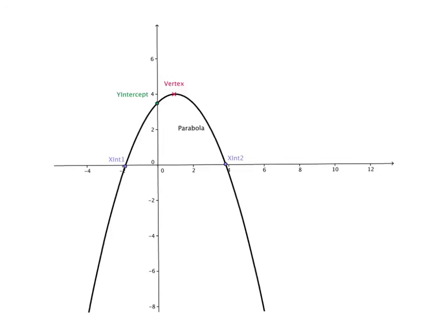And in this particular example here, it does open down, and we have two x-intercepts. You might be asking yourself, could you have a parabola that opens down and has no x-intercepts?